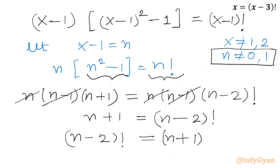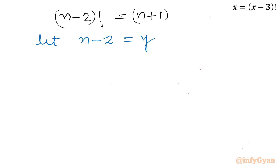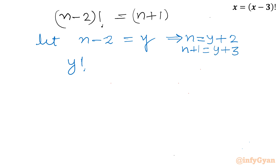Now I will use another substitution. Let n - 2 = y. So on the left-hand side we have y!, and on the right-hand side it is n + 1. From the substitution, n equals y + 2, so n + 1 equals y + 3. Therefore the equation becomes y! = y + 3.